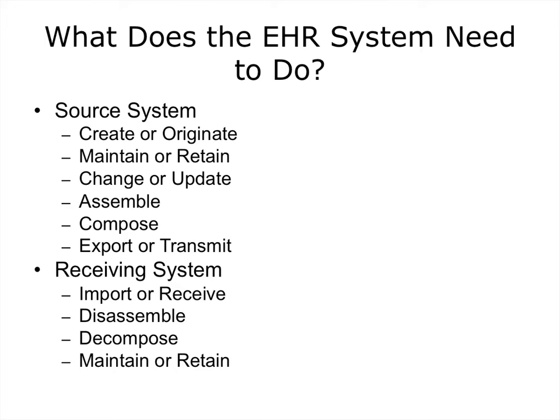In relationship to trust and data provenance, what does the electronic health record system need to do? If it is a source system, the EHR needs to create and maintain data for the legally required timeframe, which differs according to provider type, setting, or geographical region. You need to be able to change or update the data if appropriate and legally allowed, assemble it in something understandable by decision-makers, compose documents and messages, and then export or transmit the data — sometimes with the provenance associated with it and sometimes not. The receiving system needs to be able to import or receive data from the source system, disassemble it and put it in the right places in the record for access and decision-making, decompose messages if appropriate, and finally retain the data for the timeframe needed.